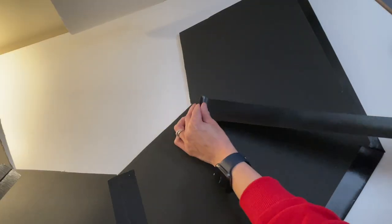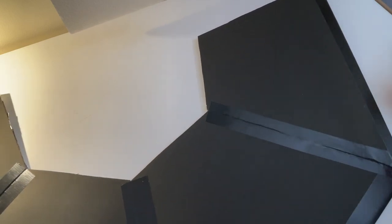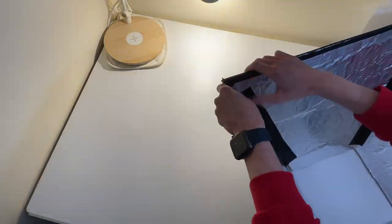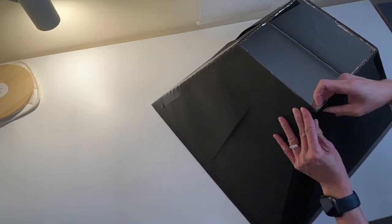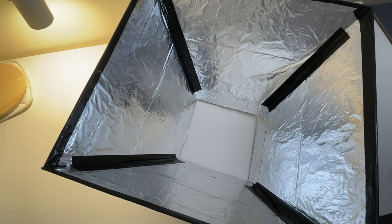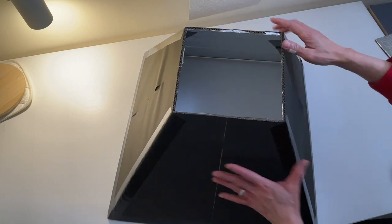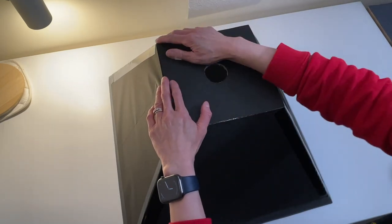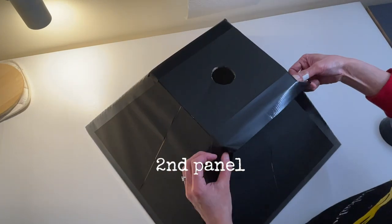As I mentioned before, if your measurement is accurate, this part shouldn't have any problems. The outcome should look like this. I'm sure you should be pretty proud of yourself at this point. We are nearly there. Let's attach the base using the duct tape. Make sure all four edges are lined up with the top of the panels.